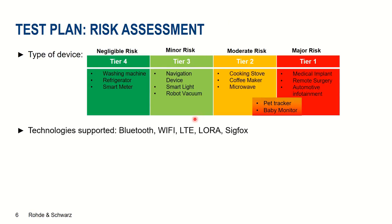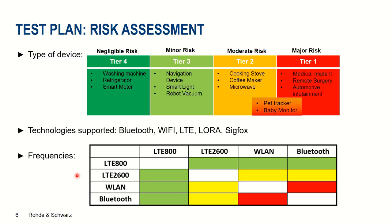The second step in the risk assessment process is to understand what technologies your device under test supports and categorize them in terms of frequency and bands. Then we need to perform a risk assessment matrix analysis. For example, if WLAN operating at 2.4 GHz is my wanted standard, is LTE 800 MHz an interference source? Most likely not — so it's marked green and we can ignore it.